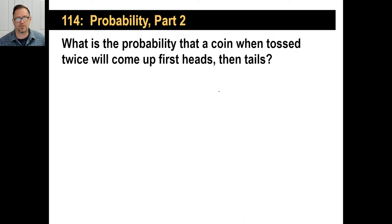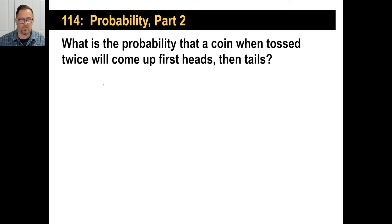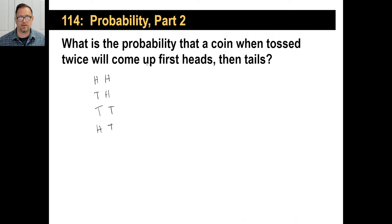What's the probability that a coin tossed twice will come up first heads and then tails? Someone suggested writing down all the possibilities: it could be heads-heads, heads-tails, tails-heads, or tails-tails. The outcome we want — heads then tails — is just one of those four possibilities. So the answer is one out of four.